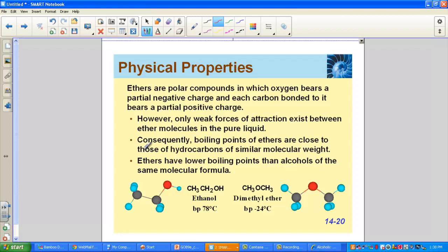Ethers are polar compounds in which the oxygen bears a partial negative charge and each attached carbon bears a partial positive charge. Looking at the structure of an ether reminds us that the oxygen does have this exposed pair of electrons set up at the surface here, giving this region partial negative and pulling on this would be a little partial positive on the carbons.